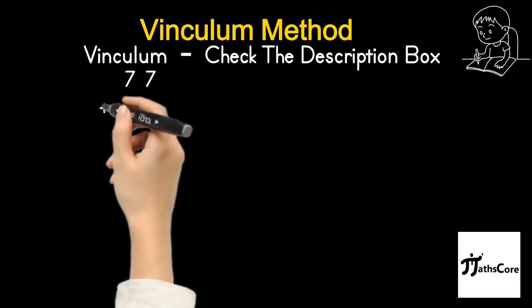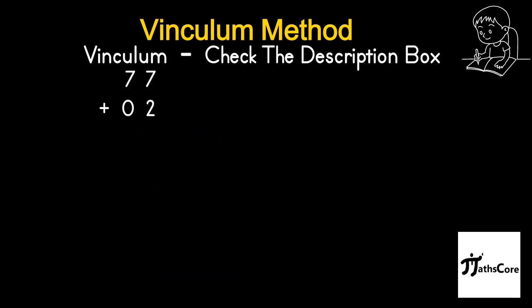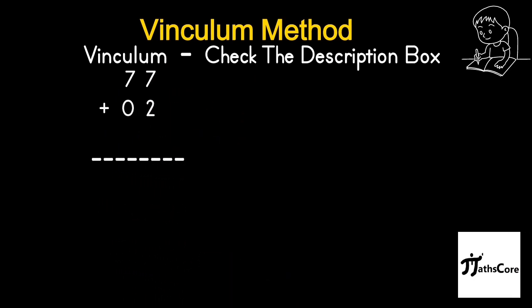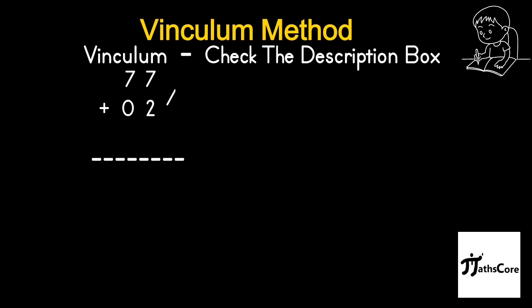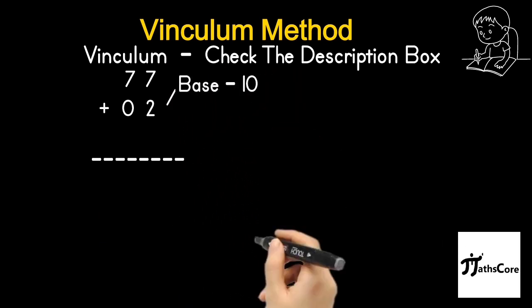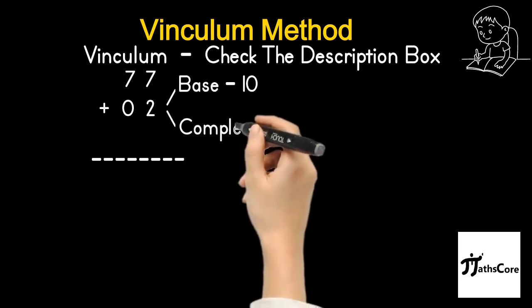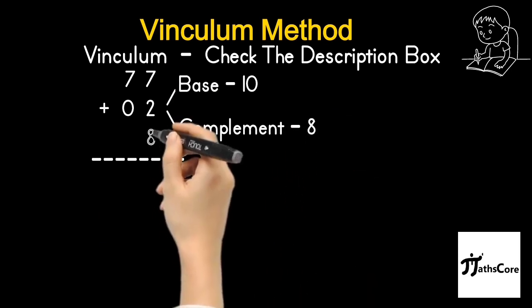Now let us solve this example: 77 plus 2. Add 0 before 2 to make it a 2-digit number, then find out the base and complement for 02. So base is 10 and complement is 8. Write down 8 below 2 and 1 below 0.